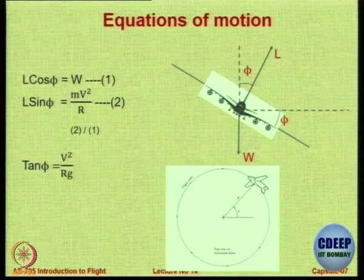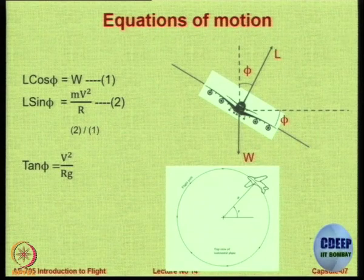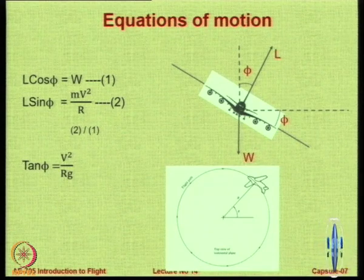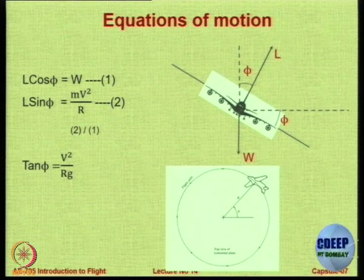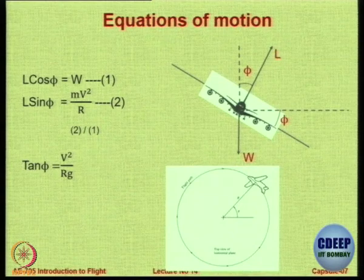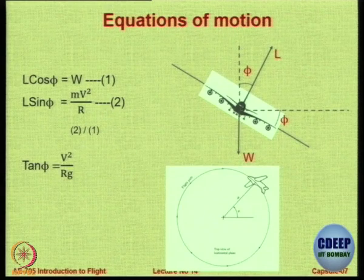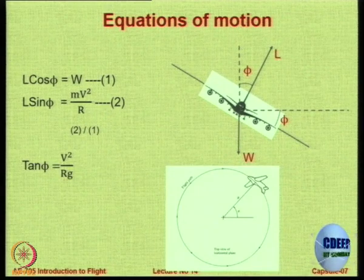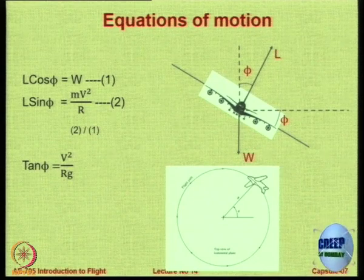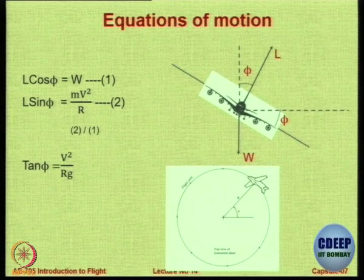If you want the angle phi to be small, then let your speed be small or let your radius be large. This is what is seen in transport aircraft — we go for a very long turn because banking at a large angle can cause discomfort to passengers. In a military aircraft, they either want to turn very fast with a high velocity in the turn, or they would like to have a very small turn radius, so they have to bank it larger.